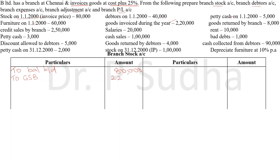For credit sales, when the branch makes sales goods go out, so the value of stock comes down — we credit branch debtors account, 2,50,000. Salaries, rent, and petty cash will not affect the stock account. For cash sales, whether credit or cash, it reduces the value of stock, so we credit cash account, 1,00,000. Bad debts and discount allowed to debtors will not affect the stock account.